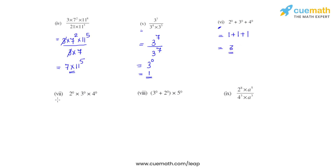In the seventh bit, again we have numbers raised to 0. So 2 raised to 0 is 1, times 3 raised to 0 which is 1, times 4 raised to 0 which is 1. So 1 times 1 times 1 gives us the final answer of 1.